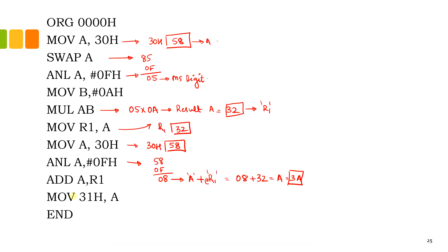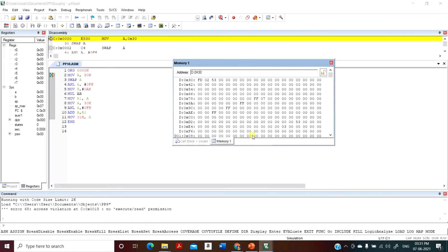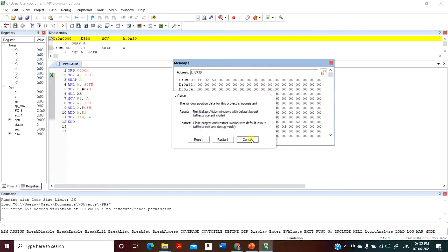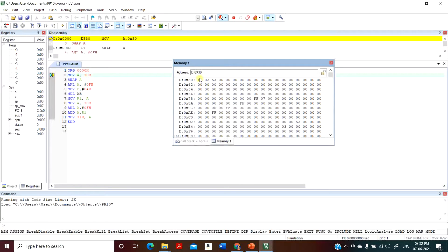Our intention is to have the final result in location 31H, so you have the line of code: MOV 31H, accumulator. Finally, terminate the code — now 31H will have the result 3A. In location 30H we stored input 58.